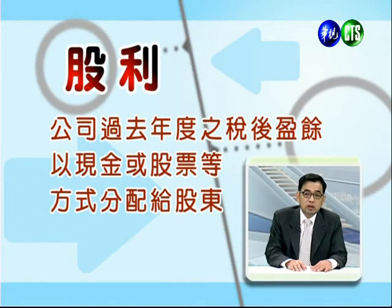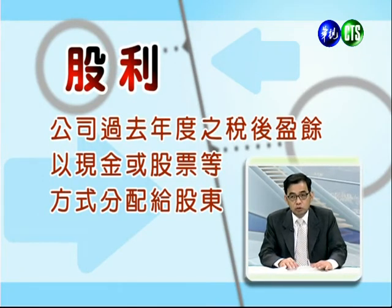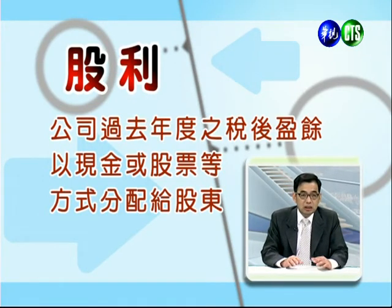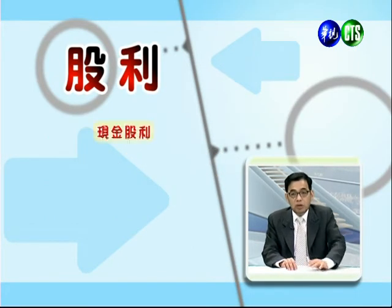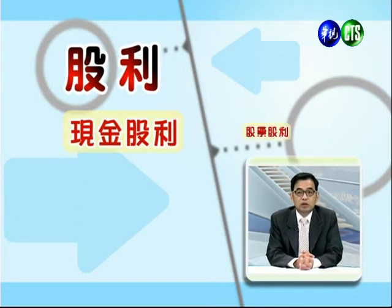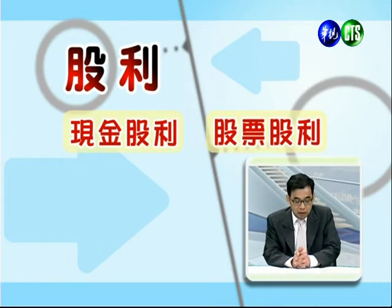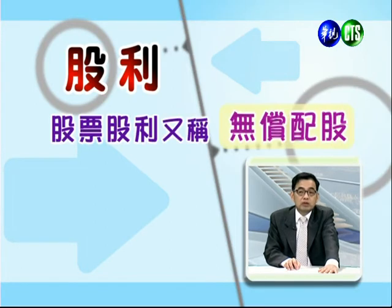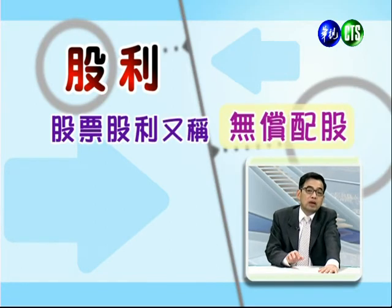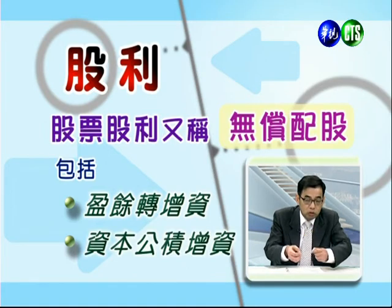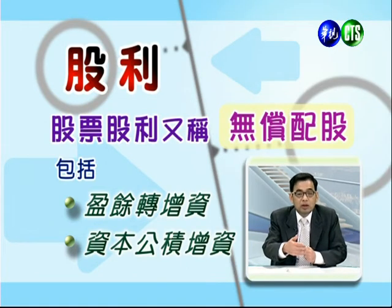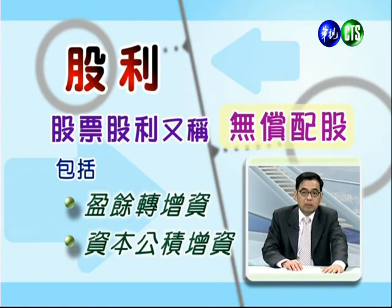第八，融资余额减少、融券余额增加、大盘下跌：只是短期回档，属于短空。以上是八大变化的说明。接下来进入第三个重点：除权除息以及假除权。首先介绍股利的意义：公司在过去年度有赚钱，也就是税后盈余，可以用现金或股票的方式分配给股东，这称为股利。股利又分为现金股利跟股票股利，股票股利一般称为无偿配股，也就是配发股票给股东但不收钱。